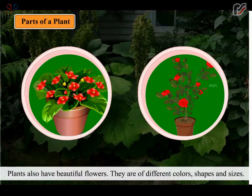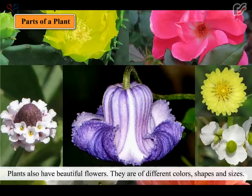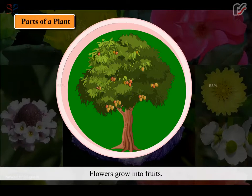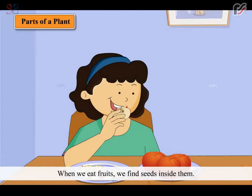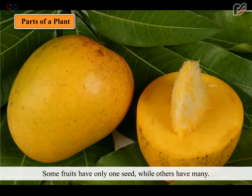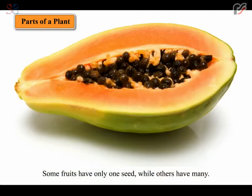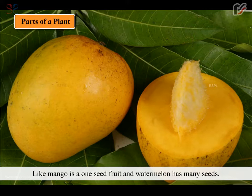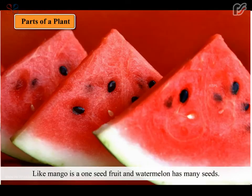Plants also have beautiful flowers. They are of different colors, shapes and sizes. Flowers grow into fruits. When we eat fruits, we find seeds inside them. Some fruits have only one seed while others have many. Like mango is a one seed fruit and watermelon has many seeds.